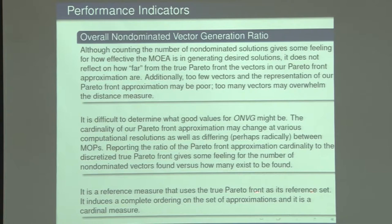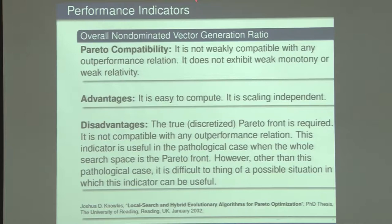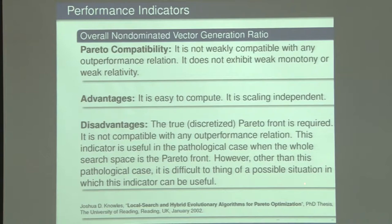Reporting the ratio of Pareto front approximation cardinality to the discretized true Pareto front gives only some feeling for the number of non-dominated vectors found versus how many we expect. It is a reference measure, induces complete ordering, and is cardinal. It's not weakly compatible, not reliable, doesn't exhibit weak monotony or weak relativity. Easy to compute and scaling independent, but requires the true Pareto front — discretized so we have a fixed number of solutions. Not compatible with any outperformance relation; useful only in the pathological case when the whole search space is the Pareto front.